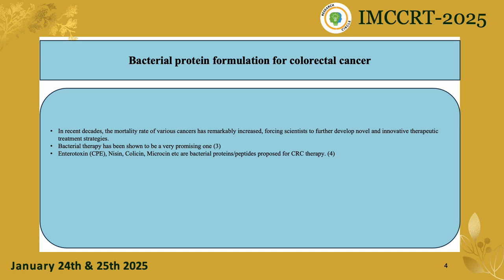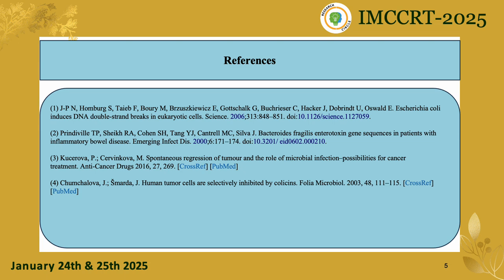These bacteria can be coated with different substances like chitosan and other polymers, which can help in the formulation of different bacterial proteins for the treatment of colorectal cancer. Different kinds of vaccines and polymeric substances can be used to coat the bacterial protein into different formulations that can be helpful for the treatment of colorectal cancer.